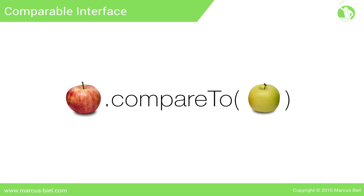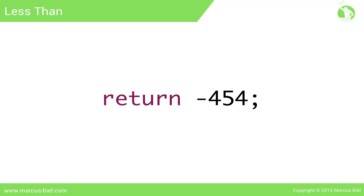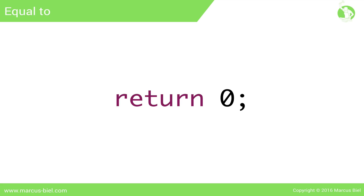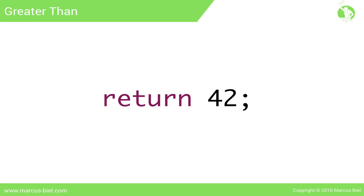But how do we know if one apple is actually less than, equal to, or greater than the other apple? If this apple is considered less than the other apple, we have to return an arbitrary negative number — mine is -454, for example. If both apples are considered equal, we have to return 0. Finally, if this apple is considered greater than the other apple, we have to return an arbitrary positive number — 42, for example.